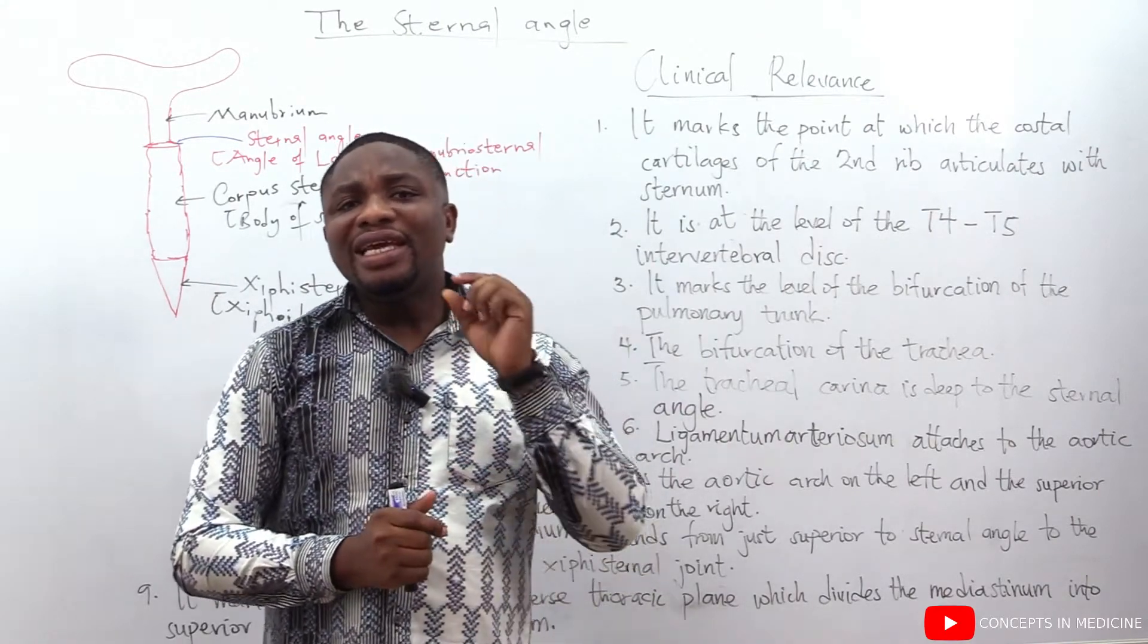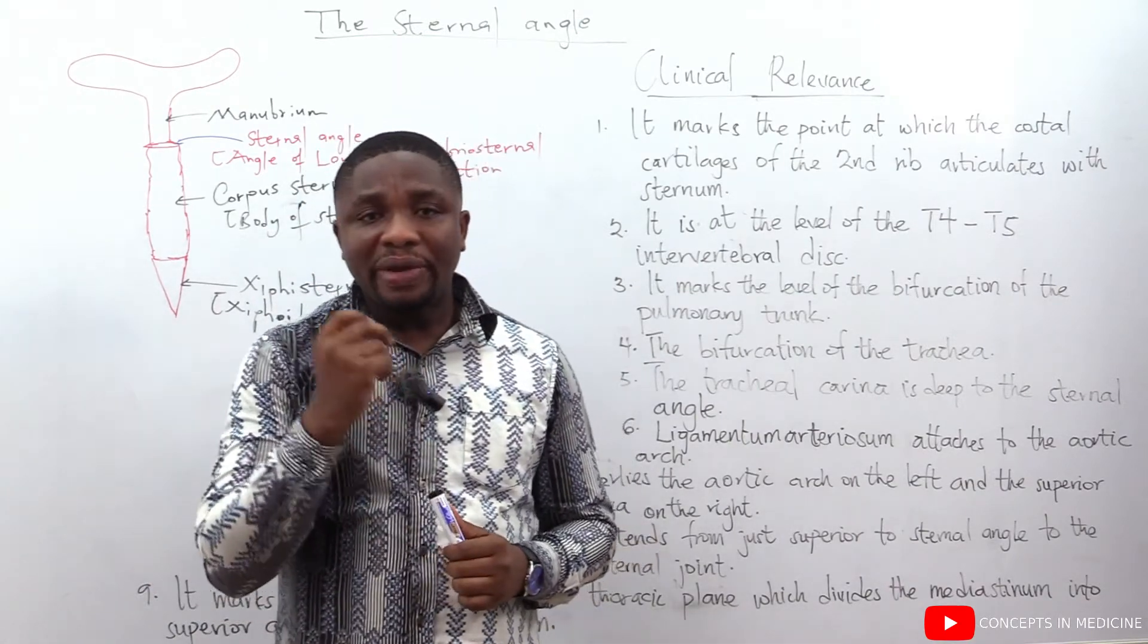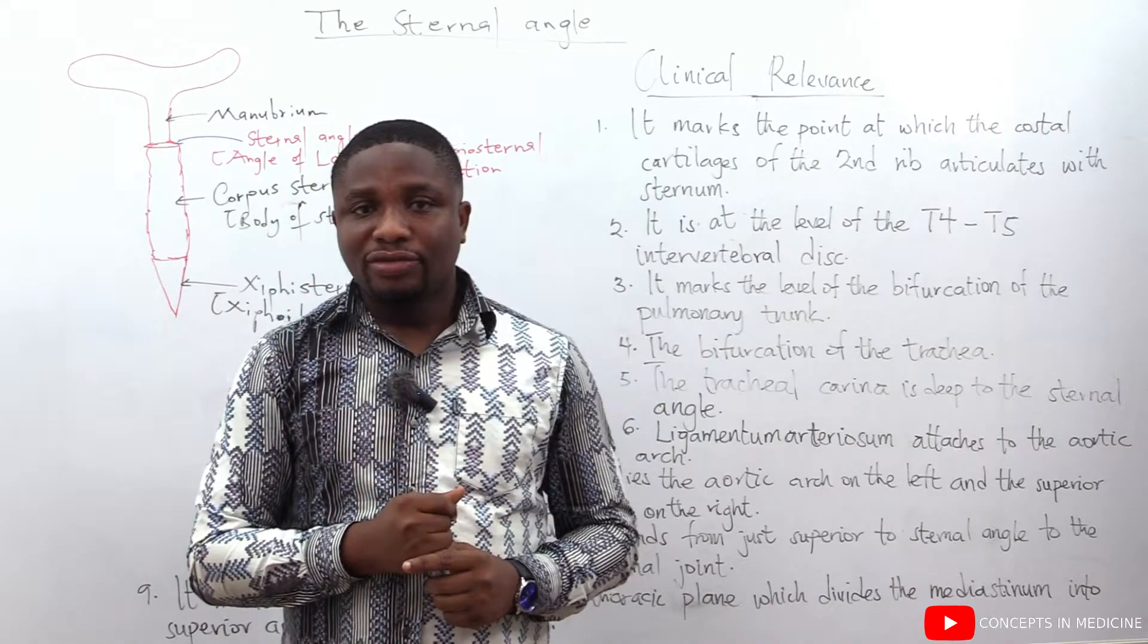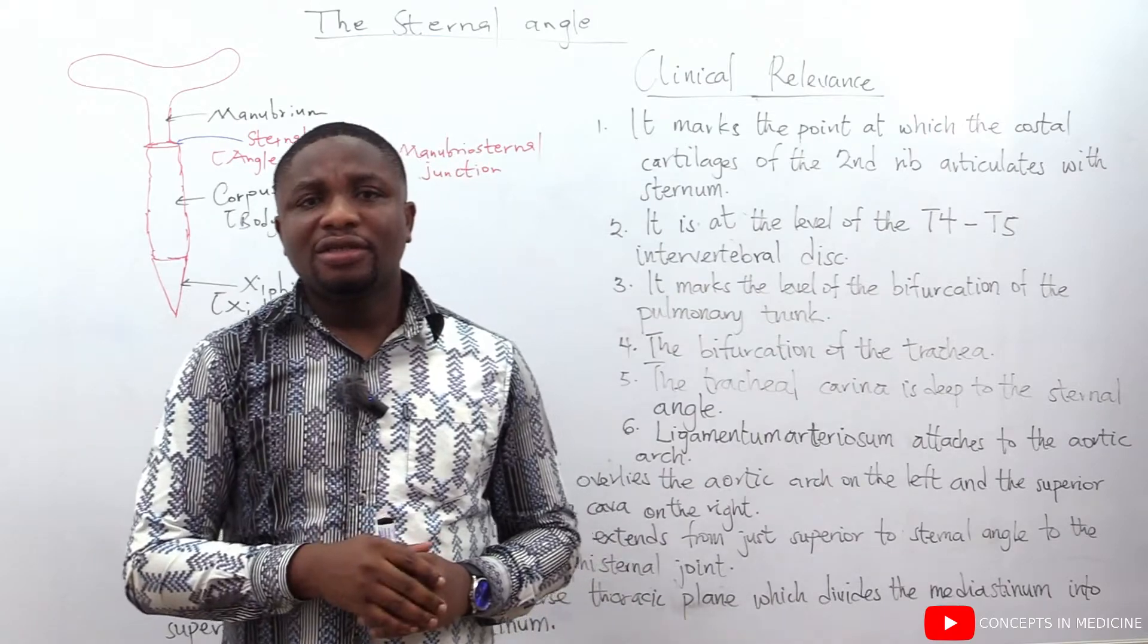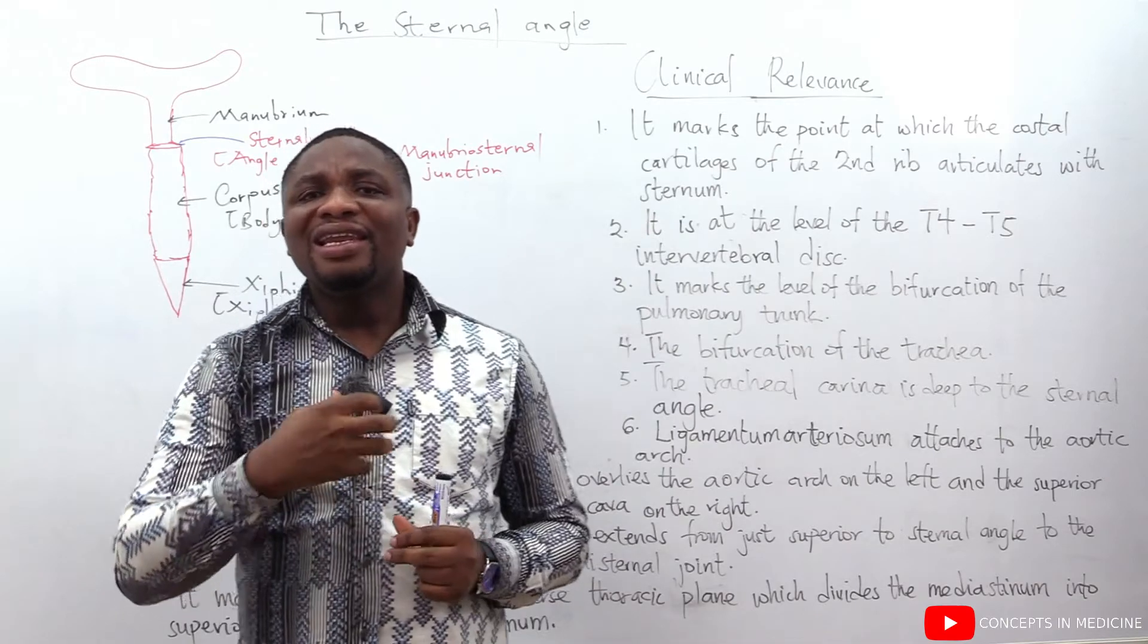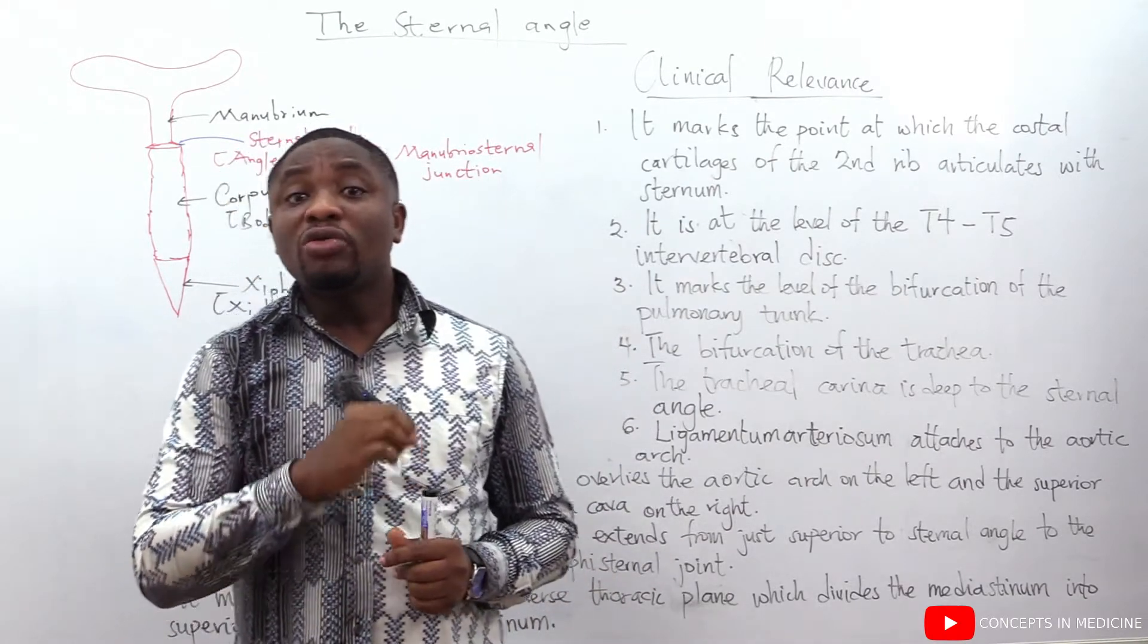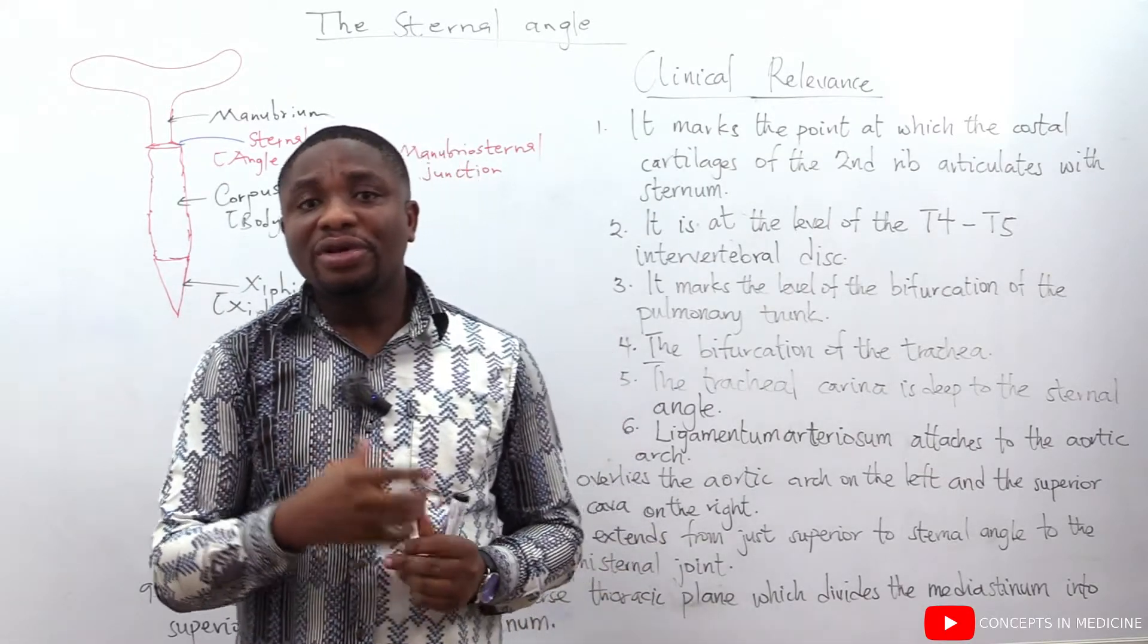The sternal angle marks the level at which the costal cartilages of the second rib articulate with the sternum. And for this particular clinical relevance, it is also very useful in the counting of the ribs. As the first rib is often impalpable and as such, counting the wrong ribs may land a thoracic incision into the wrong intercostal space causing damages.